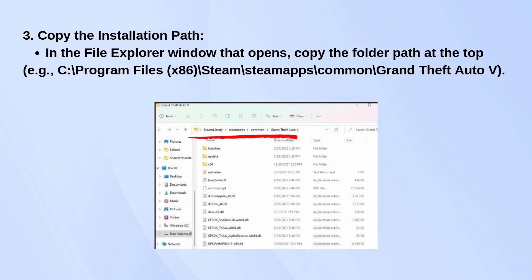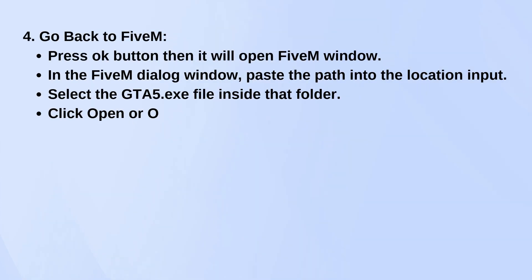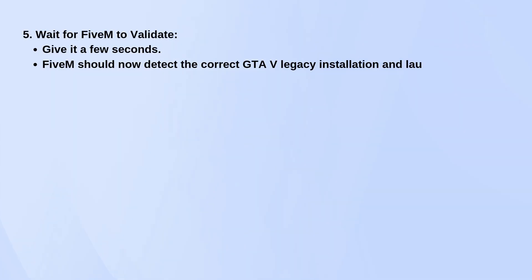Now go back to the FiveM window. There should be a place to paste in that folder path. Once you do that, select the GTA5.exe file inside the folder and confirm it. Wait a few seconds while FiveM checks everything — if all goes well, it should detect the correct version and launch the game like normal.